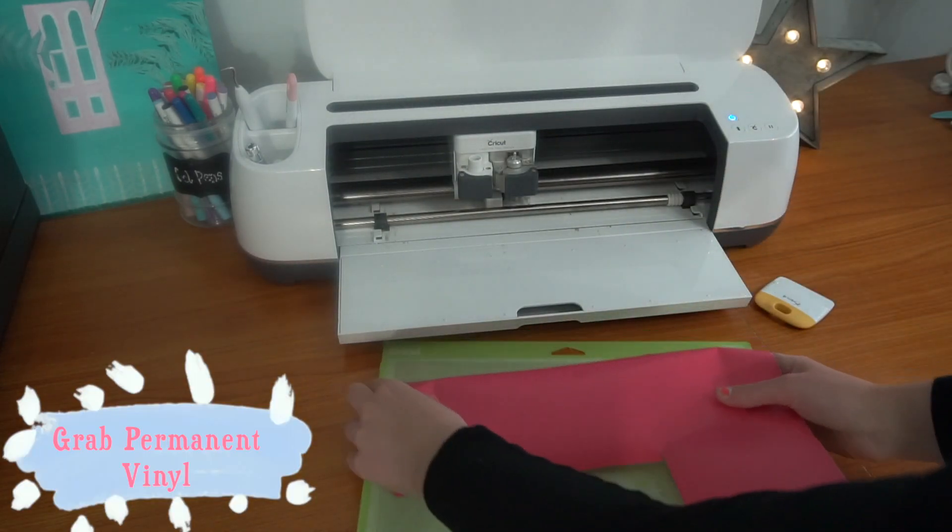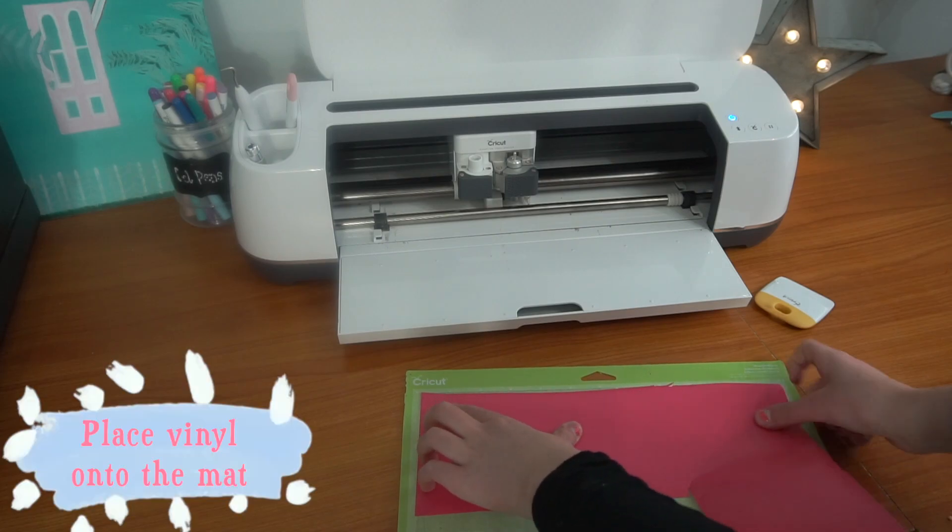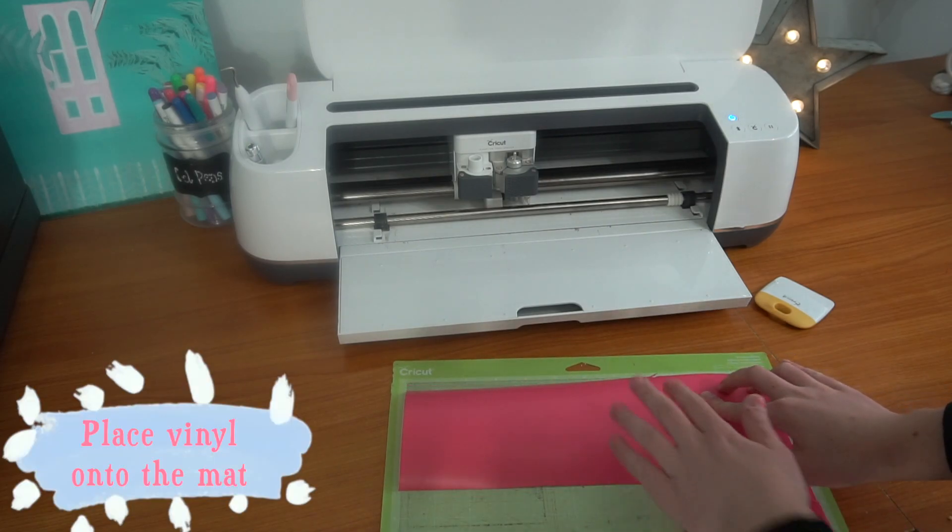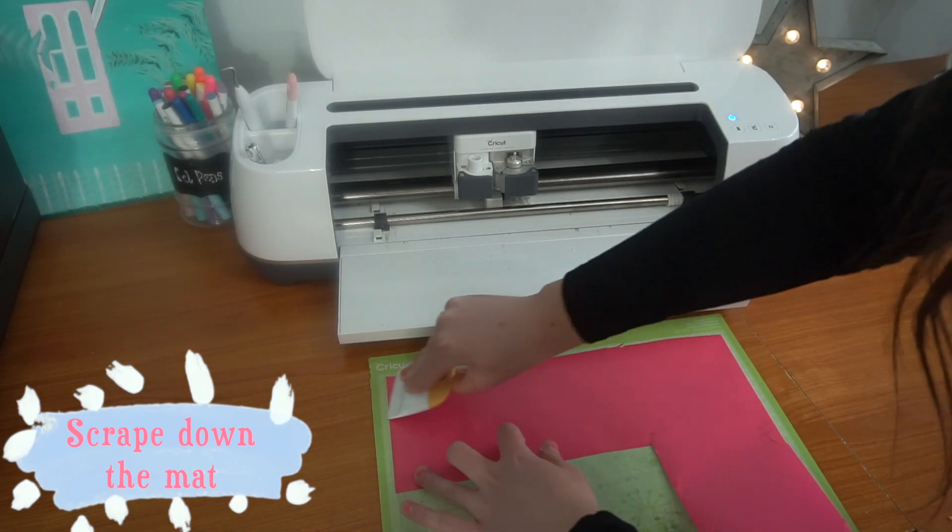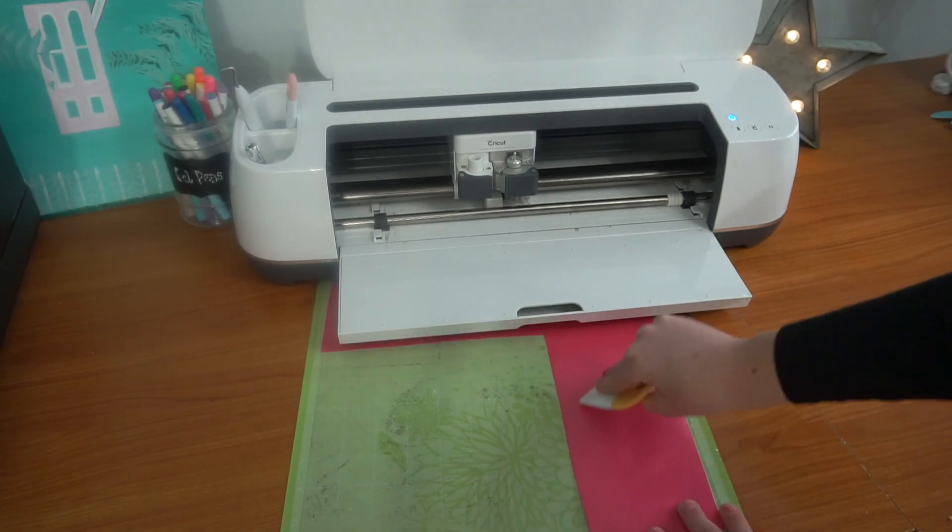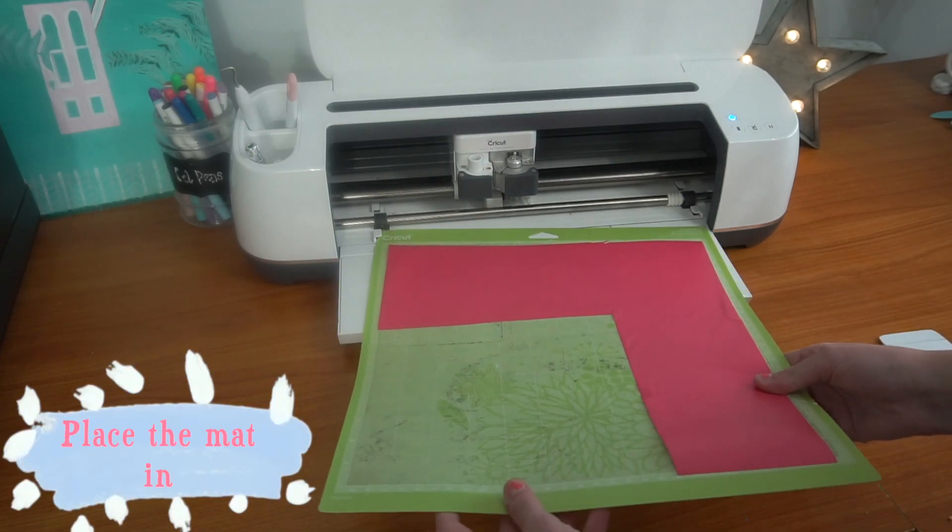Grab permanent vinyl. Place the vinyl onto the mat. Scrape down the vinyl to secure it to the mat. Place the mat into the machine.